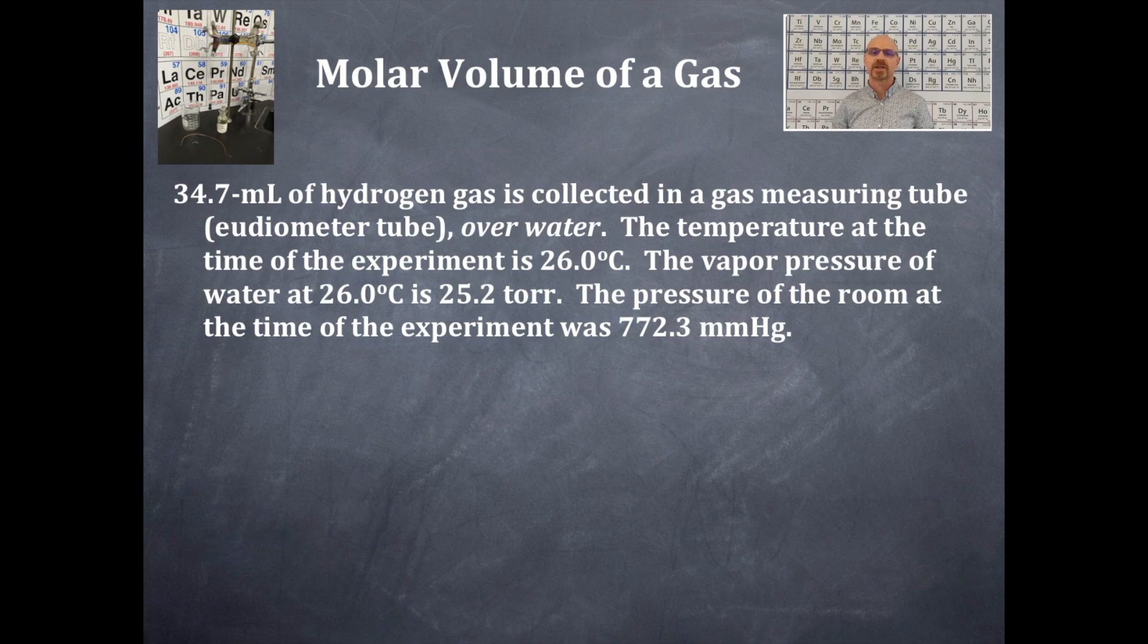And here's our problem that we're going to do here. So I'm going to read this out to you. 34.7 milliliters of hydrogen gas is collected in a gas measuring tube, that's a eudiometer tube, over water. The temperature at the time of the experiment is 26.0 degrees Celsius. The vapor pressure of water at 26 degrees Celsius is 25.2 torr. The pressure of the room at the time of the experiment was 772.3 millimeters of mercury.